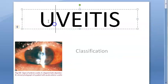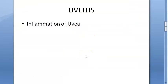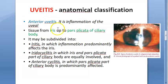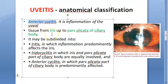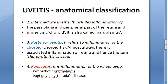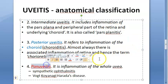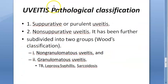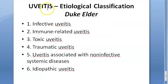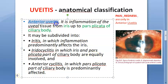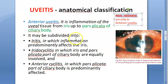To summarize: uvea is iris, ciliary body (pars plicata and pars plana), and choroid. Uveitis is inflammation of the uveal tract. Anatomical classification: anterior (iris + pars plicata involved — iritis, iridocyclitis), intermediate (pars plana — pars planitis), posterior (choroiditis), pan uveitis (everything). Clinical: acute, chronic, recurrent. Pathological: suppurative, non-suppurative — granulomatous and non-granulomatous. Etiological: infective, immune, toxic, traumatic, non-infective, idiopathic. Remember: pain and redness are present in anterior uveitis but not in intermediate or posterior uveitis.